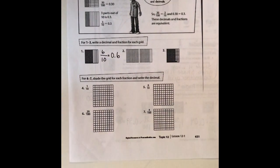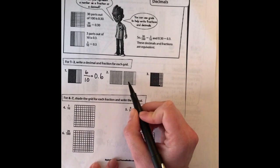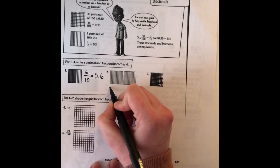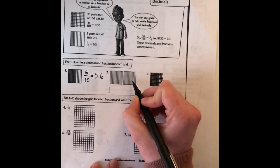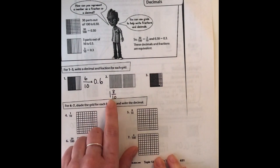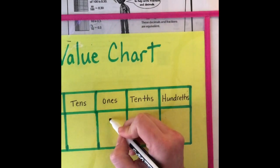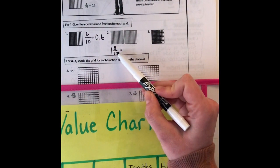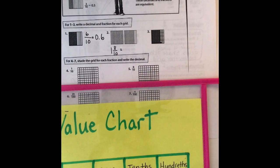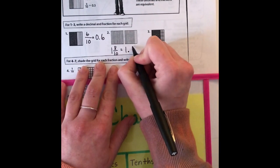For number two, we have one whole filled in and the parts are tenths again. Since one whole is filled in, it's going to be a mixed number. Over here I have eight tenths filled in, so the mixed number is 1 and 8 tenths. Since we have a whole number, we put a 1 in the ones place on the place value chart, and 8 in the tenths. So my decimal would be 1.8 — one and eight tenths equals one decimal point eight.